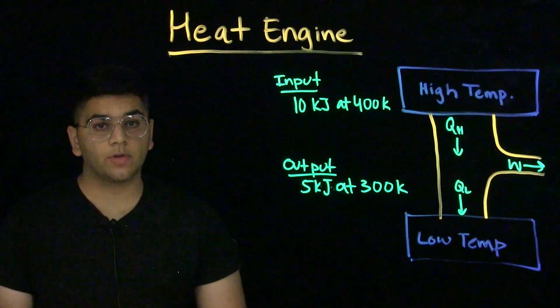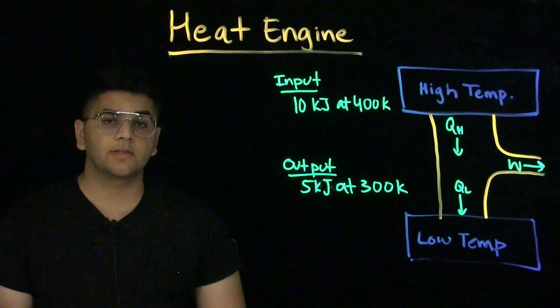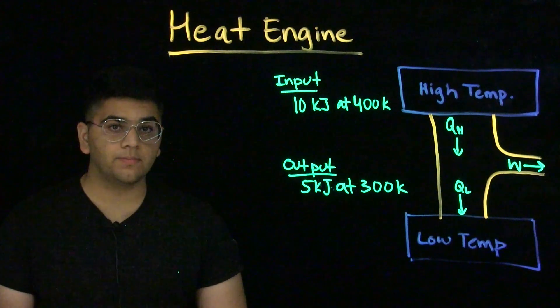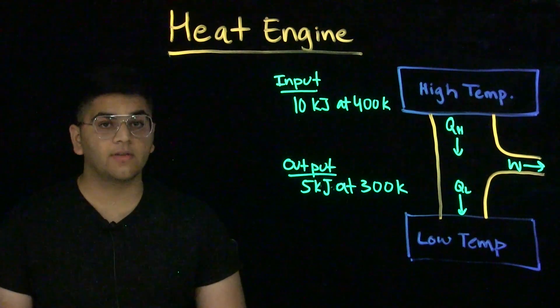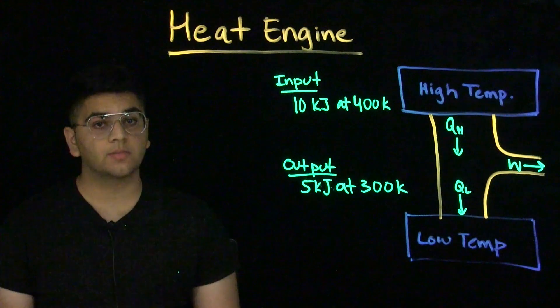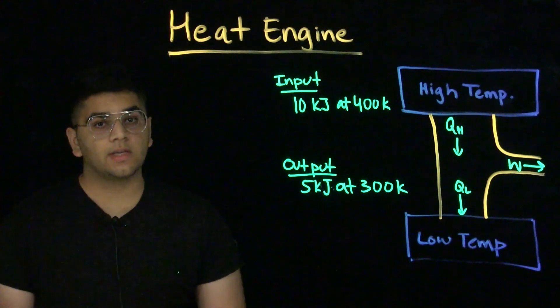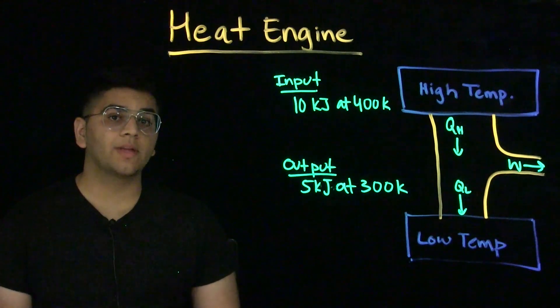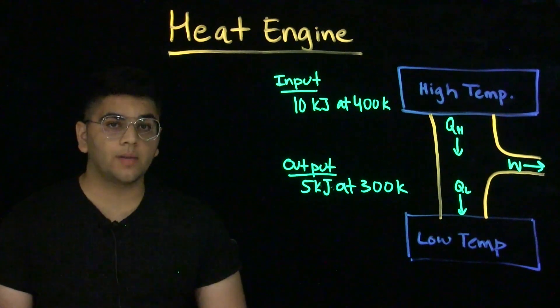Since we're testing whether or not this sort of process is true, what we're doing is we're comparing the efficiency of the engine to the Carnot engine efficiency, or the maximum efficiency possible for the system. If it is equal to or it surpasses the Carnot engine efficiency, we know that it violates the second law of thermodynamics.